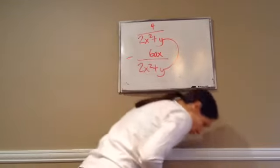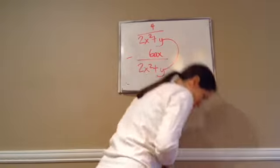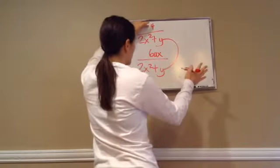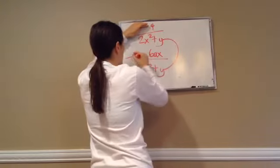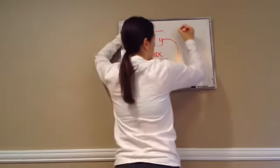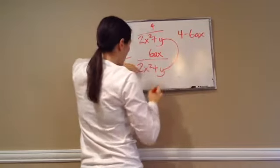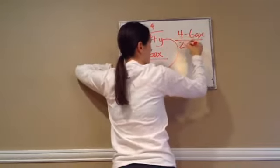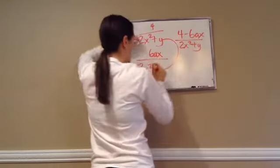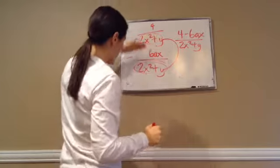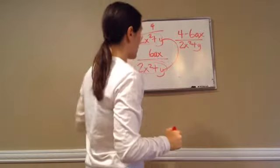Okay, so now when you do this problem, if we were to write this out, we would say 4 minus this. So I'm going to go and write that 4 minus 6ax. And then our denominator is 2x squared plus y. That will not change. That is what will remain, because we have the same denominator, which is what we want.